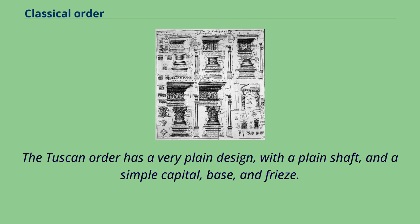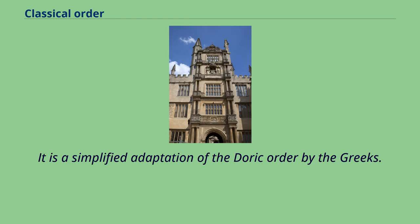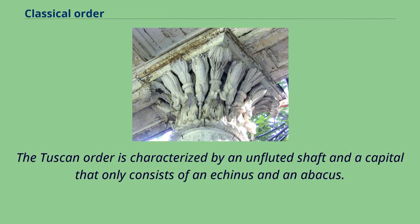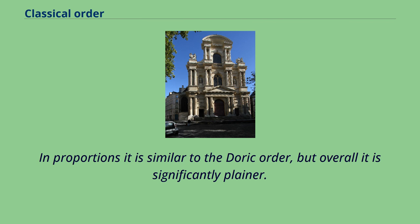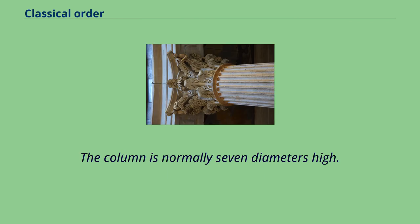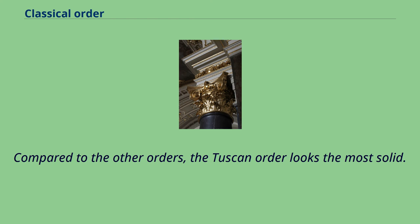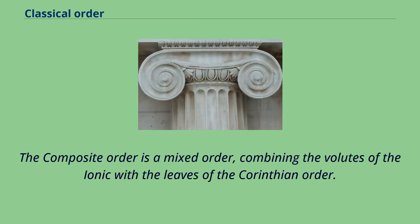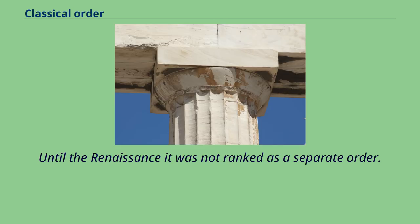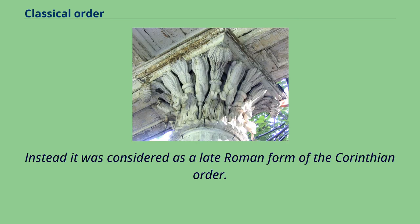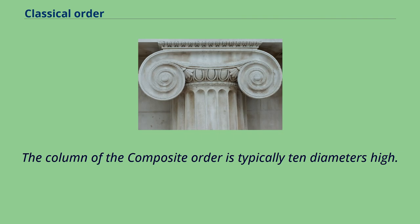The Tuscan order has a very plain design, with a plain shaft and a simple capital, base, and frieze — a simplified adaptation of the Doric order. It is characterized by an unfluted shaft and a capital that only consists of an echinus and an abacus. The column is normally 7 diameters high and looks the most solid of all orders. The Composite order is a mixed order, combining the volutes of the Ionic with the leaves of the Corinthian. Until the Renaissance it was not ranked as a separate order but considered a late Roman form of the Corinthian. The column of the Composite order is typically 10 diameters high.